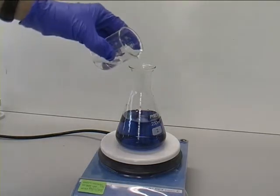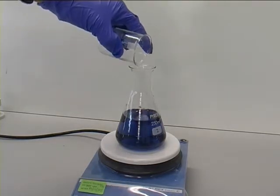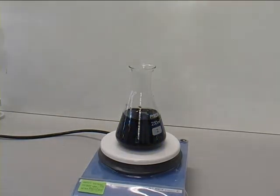10 milliliters of the peroxide solution is pipetted into a beaker and then poured from the beaker into the flask. The flask content should immediately darken.